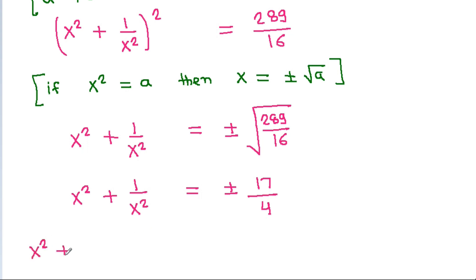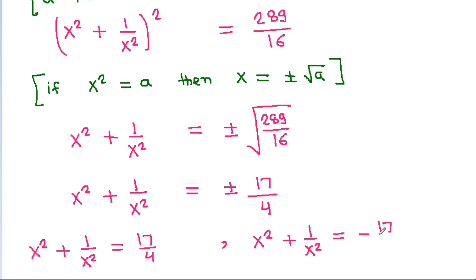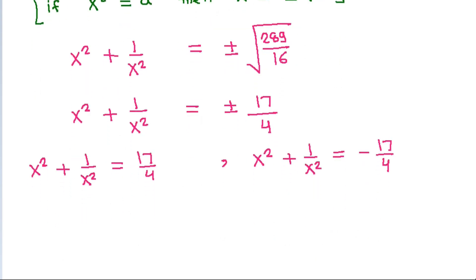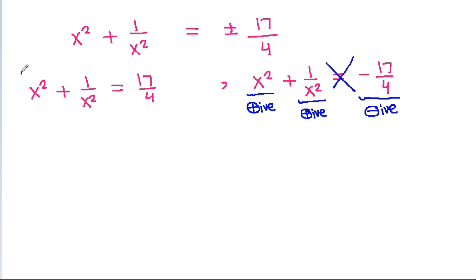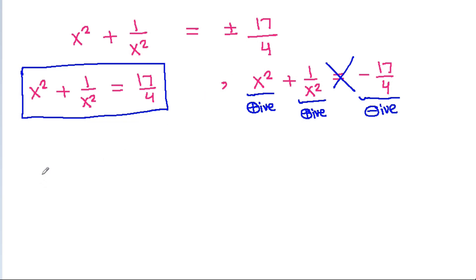Since minus 17 by 4 is negative, it is not possible. So x square plus 1 by x square is equal to 17 by 4.